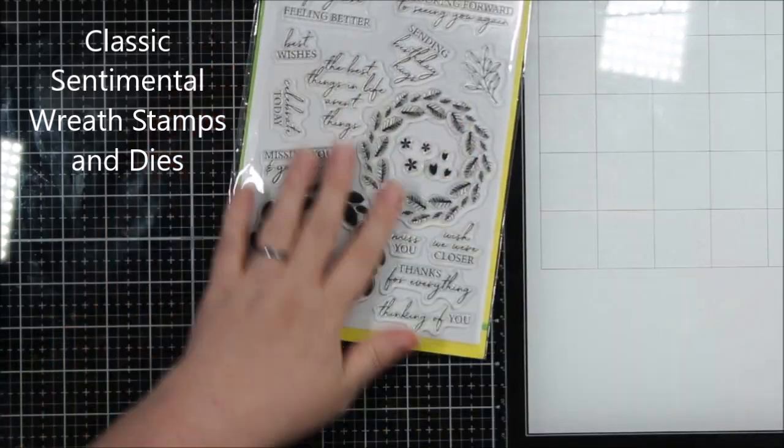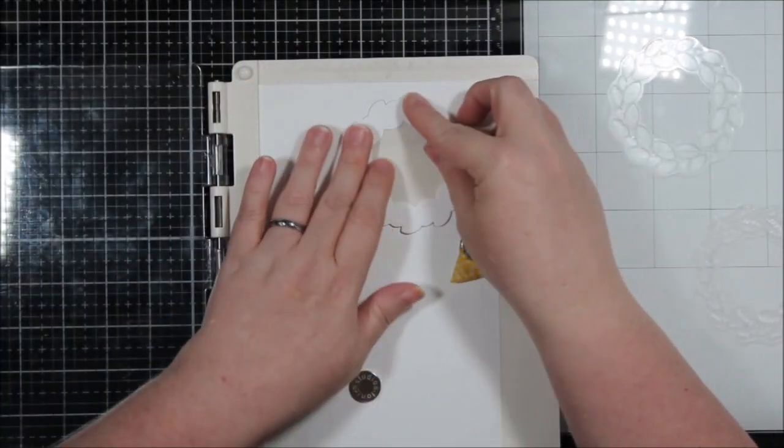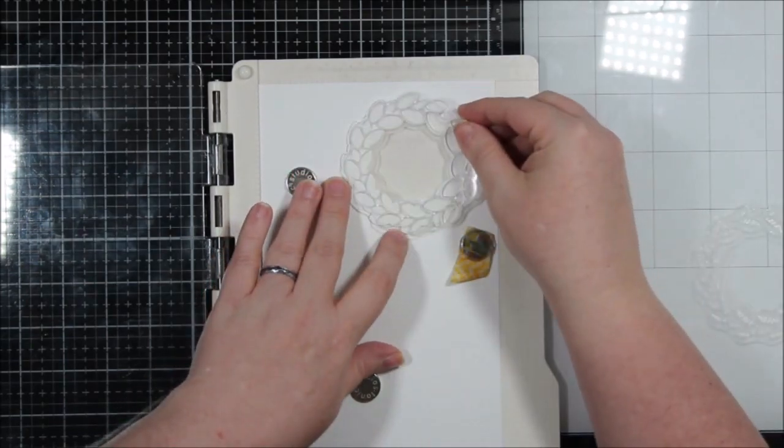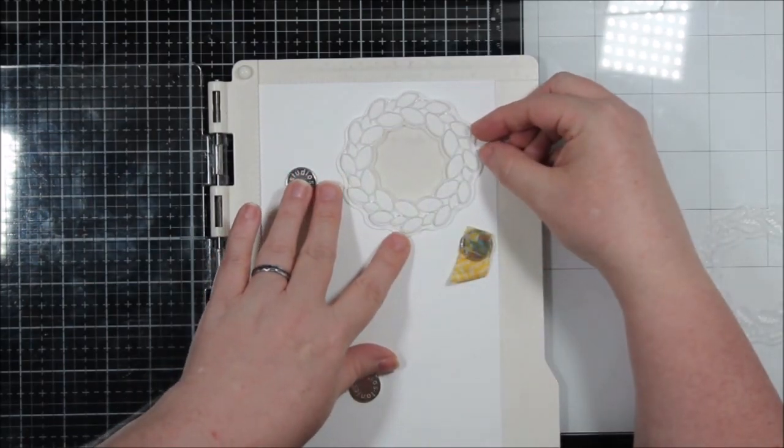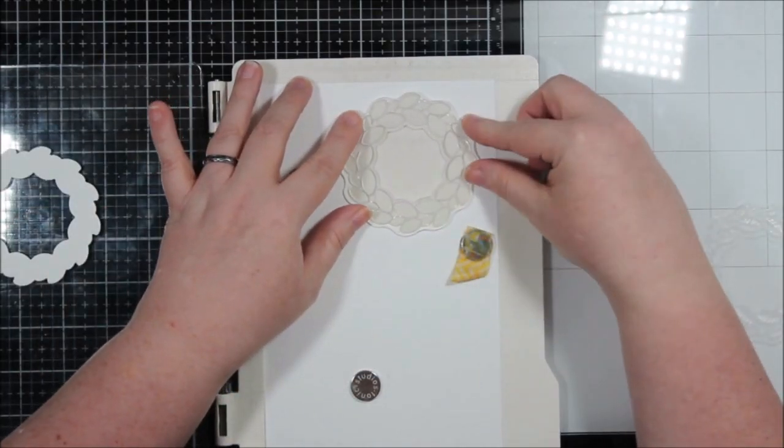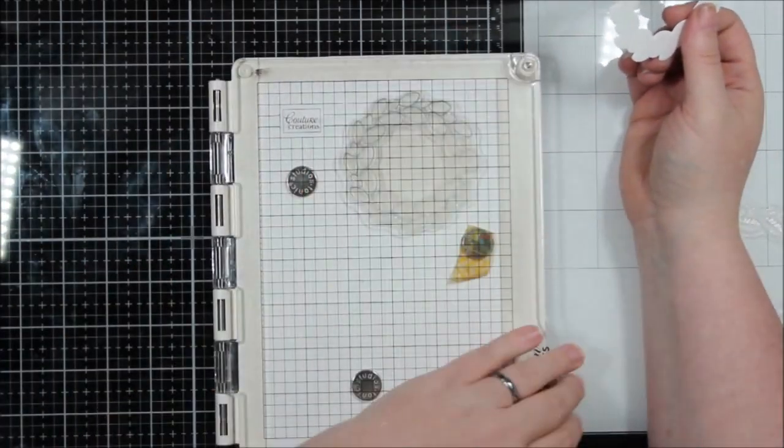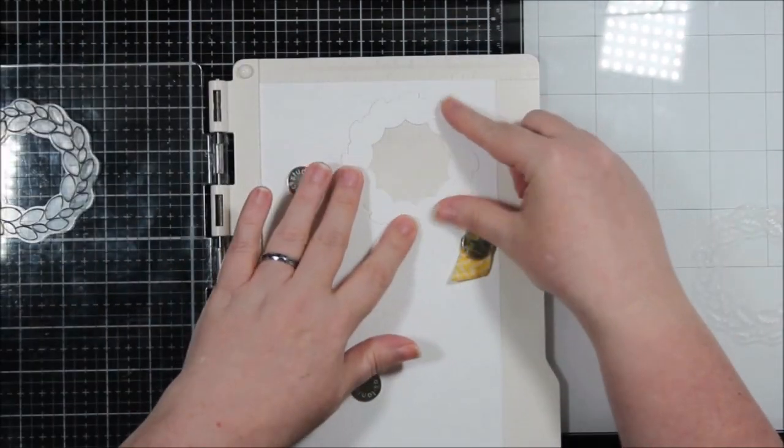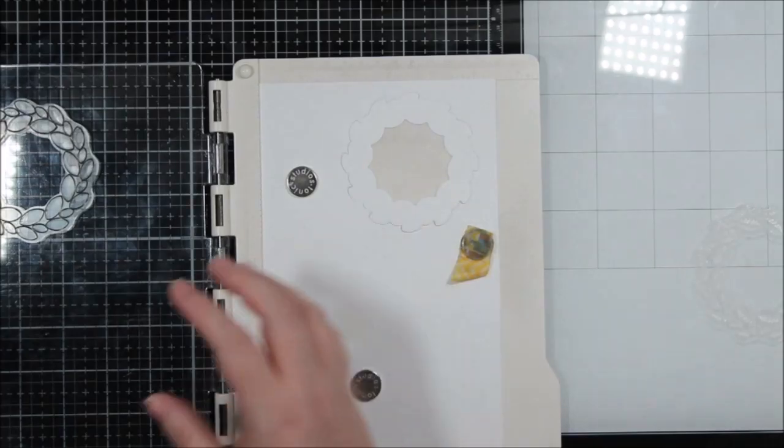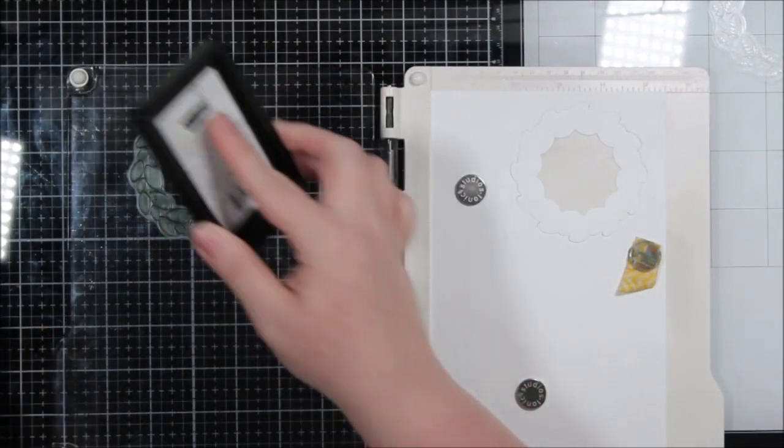I'll also be using some Memory Box products and I'll show you those as we come across them. What I have done here is die cut the wreath die from some cardstock. I'm going to remove the actual die and place in the stamp and then pick it up with my platform. It allows me to get that centered. I'm going to put the die cut back in and stamp that with some green ink.